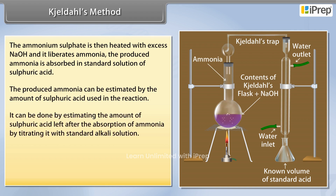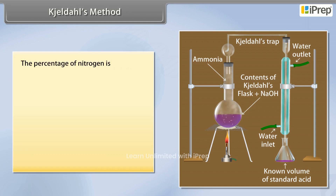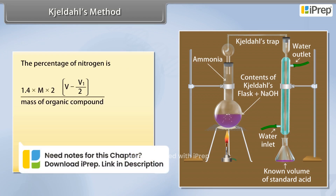This is done by estimating the amount of sulfuric acid left after the absorption of ammonia, by titrating it with a standard alkali solution. The difference between the initial amount of sulfuric acid taken and the amount left after the reaction gives the amount of acid that reacted with ammonia. The percentage of nitrogen is calculated as: 1.4 × N × 2 × (V − V1) / 2, divided by the mass of the organic compound.